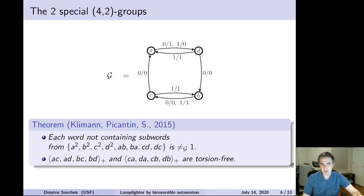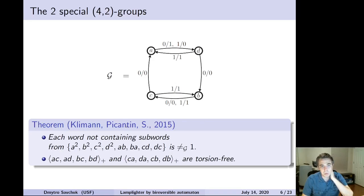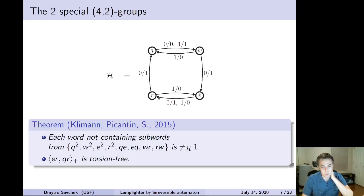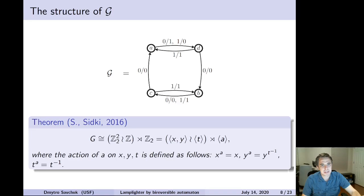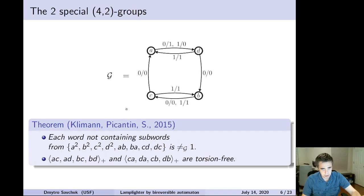Two of those six special (4,2) groups were more or less understood in 2015 in my joint work with Ines Klimann and Matthew Peckenten. We had to develop the so-called technique of orbit automata to prove that these groups contain torsion-free sub-semigroups, showing that neither of them is a new Grigorchuk-type group. A little bit later, with Said Sidki in 2016, we completely understood the structure of one of these groups — namely group G — and showed that it is an extension of index 2 of a rank-2 Lamplighter group Z₂² wr Z, and we gave a specific presentation with explicit generators.